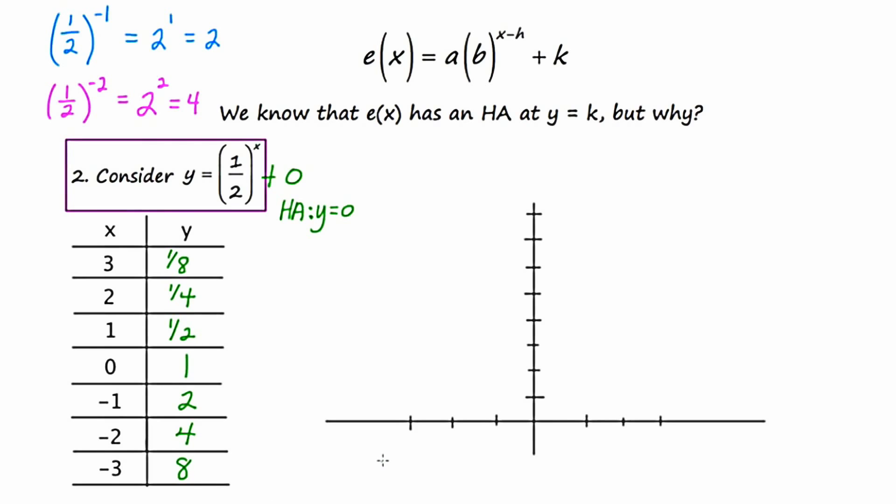Now let's set up our axes so we can plot these points. So three is now one eighth. Two is now one fourth. One is now one half. Zero is sent to one. Negative one is sent to two. Negative two is sent to four. Negative three is sent to eight.